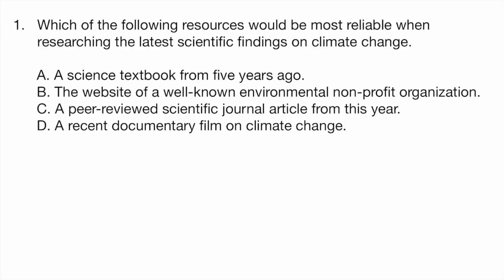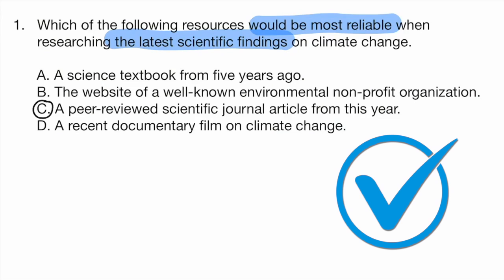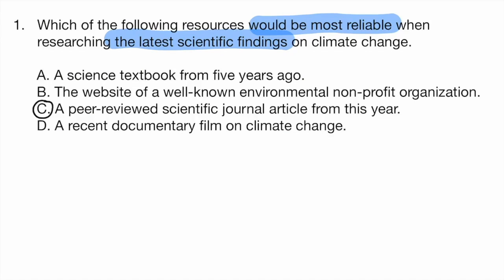Looking back at the problem, they're highlighting two things that we need to know: which one is going to be most reliable, and we want to know the latest scientific findings. The correct answer is choice C, a peer-reviewed scientific journal article from this year. The definition of peer-reviewed scientific journal means that other scientists have read the article and have either researched it themselves or duplicated the findings. So that's what peer-reviewed means — we know it's reliable because other scientists have reviewed it, and the article is from this year, giving us the latest scientific findings.